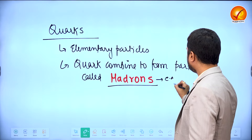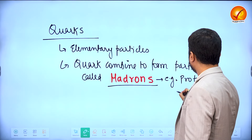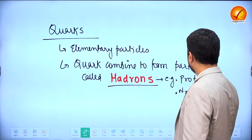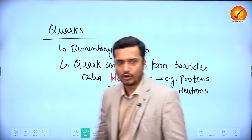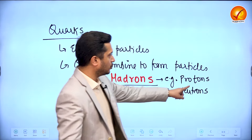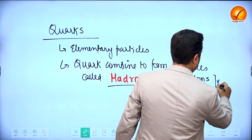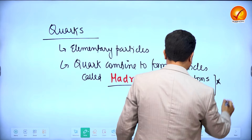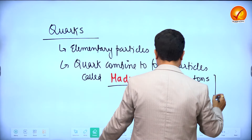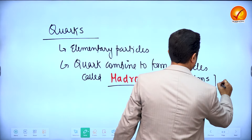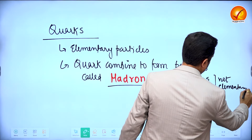For example, protons and neutrons belong to the family of hadrons — protons and neutrons are not the elementary particles themselves. They are made up of three quarks, so quarks are the elementary particles and they combine to form particles called hadrons; protons and neutrons are the popular examples of that.